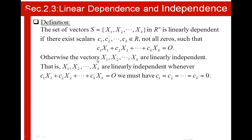such that C1 times X1 plus C2 times X2 plus CK times XK is equal to 0. Otherwise, X1, X2 to XK are linearly independent. That is, if X1, X2 to XK are linearly independent, whenever C1·X1 plus C2·X2 plus CK·XK equals 0, we must have C1 equal to C2 equal to CK equal to 0,